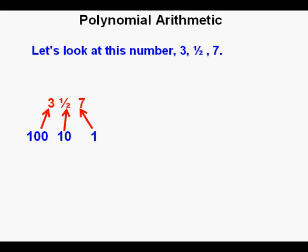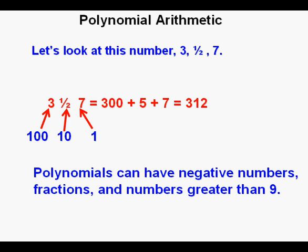Now let's take another number: 3, 1/2, and 7. We have 7 in the ones place, 1/2 in the tens place, and 3 in the hundreds place. That equals 300 + 5 + 7. Where do we get the 5? Well, 1/2 of 10, because we're in the tens place, and that would be 5. So the total value of the number is 312. What we learn from these two examples is that while in numbers we can only have positive placeholders, polynomials can have negative numbers, fractions, irrational numbers, and even numbers greater than 9.